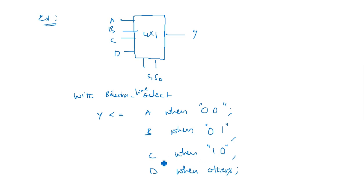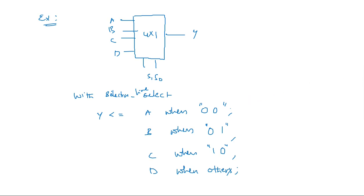So in this way, the conditional signal assignments can be written for data flow modeling using with...select, as well as conditional signal assignment statements using when-else conditions. Thank you.